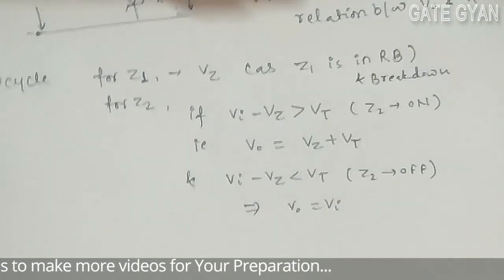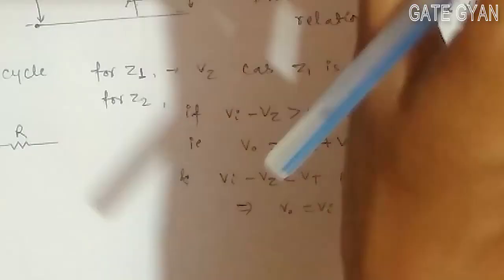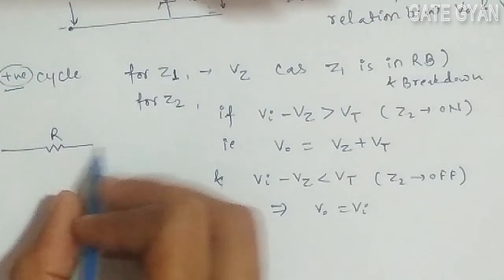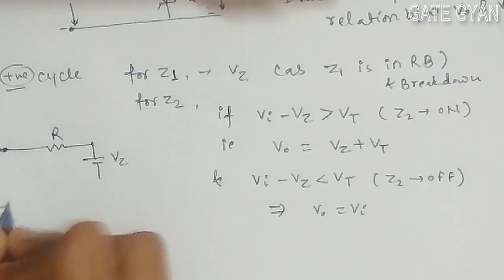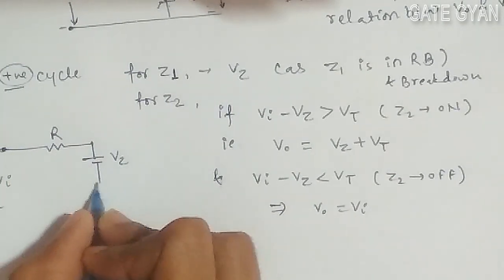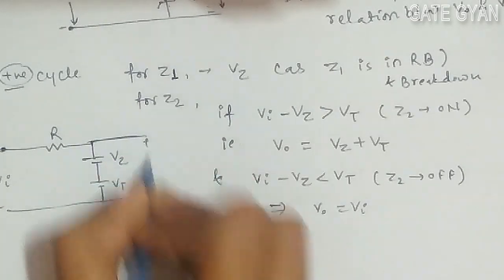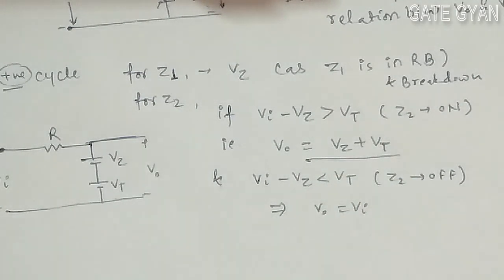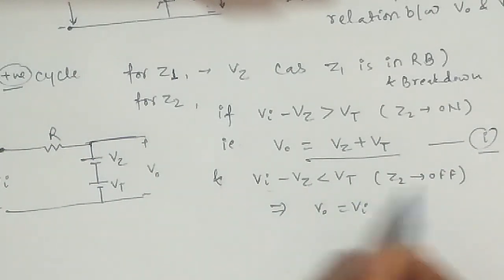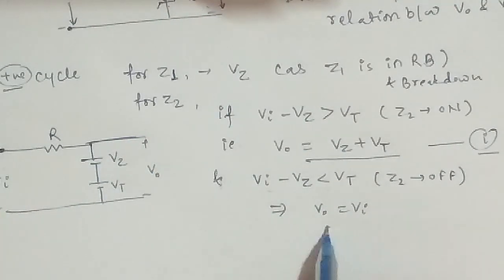So how will it look in the positive cycle? Drawing the circuit: this is my VZ in breakdown, with VI as input and V0 as output. The second diode voltage is VT, so V0 becomes equal to VZ plus VT. This is the first case. If VI minus VZ is less than VT, then the second diode turns off, it becomes open circuit, and the output becomes directly equal to the input.